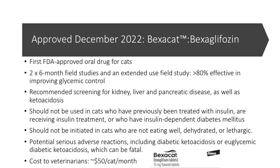Cats should be in good condition when started on this drug. The major adverse effects include euglycemic ketone bodies, and potentially — though less common — actual diabetic ketoacidosis where the animal's glucose would rise. The cost to the veterinarian is approximately $50 per cat per month, so with a multiplier of two or three, you can see what this might cost an owner. This drug is best suited for cats caught early in the development of diabetes.